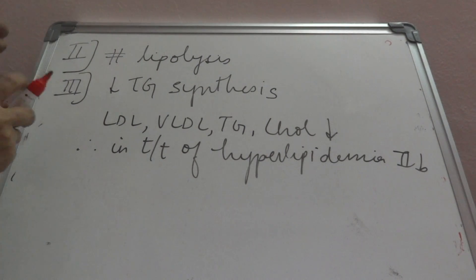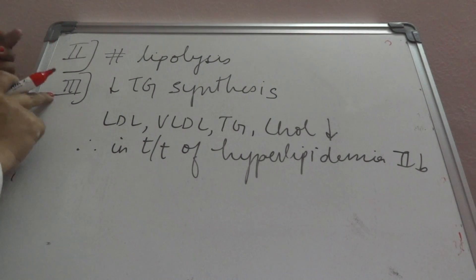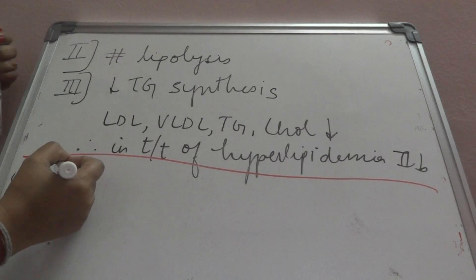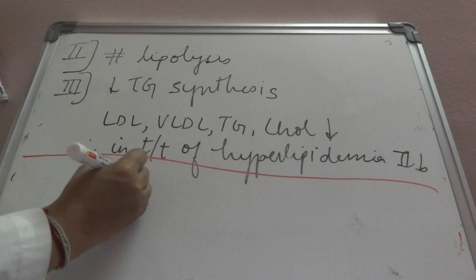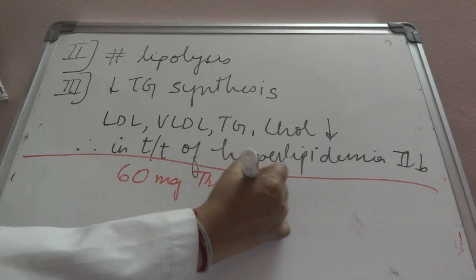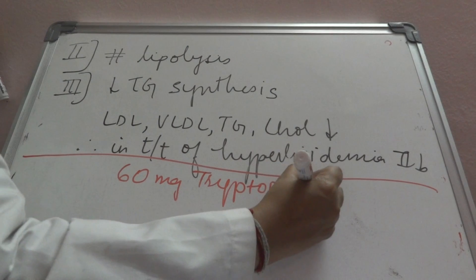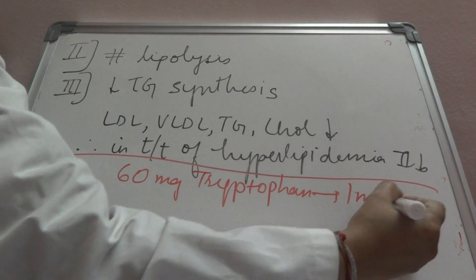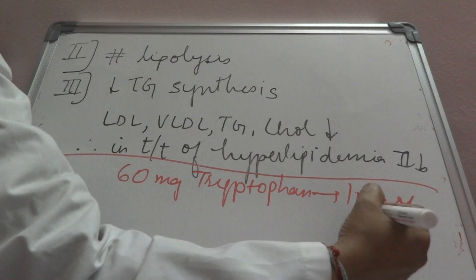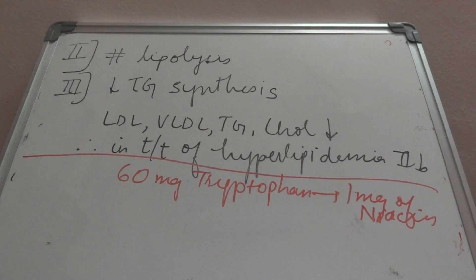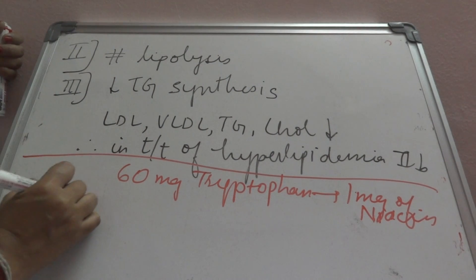Nicotinic acid is also given in altered lipid profiles even if there is not type 2B hyperlipidemia. Also, 60 mg of tryptophan can give us 1 mg of niacin.